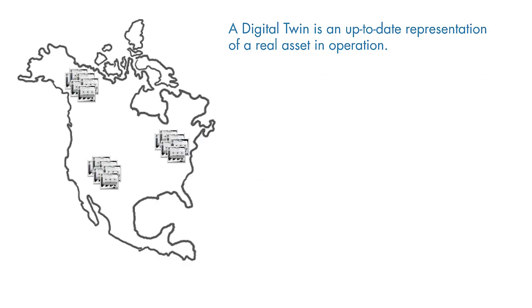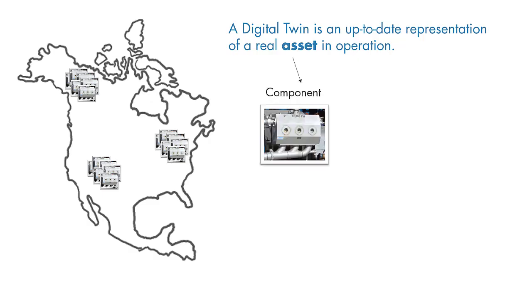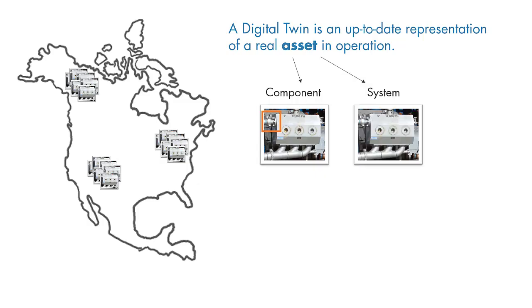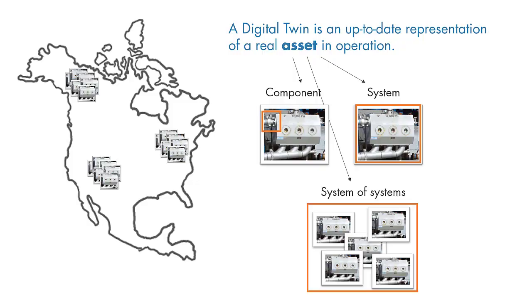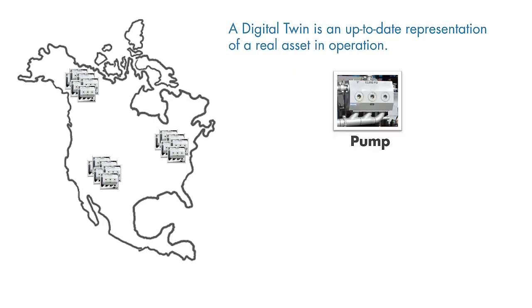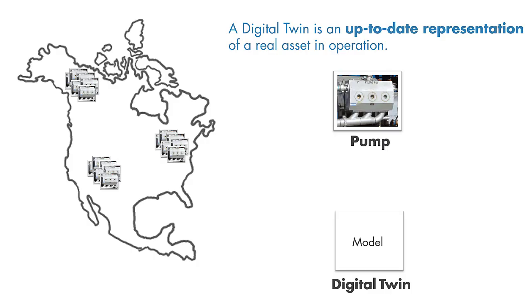What we refer to as an asset in the definition of the digital twin may be a component of a system, such as the valve of the pump, or it can be a system — the pump itself — or it can be a system of systems, which would be the well site with multiple pumps. Here, we'll assume that our asset is the pump. An up-to-date representation of the pump can be achieved by creating a model that is updated with the incoming data from the pump to represent its current state.